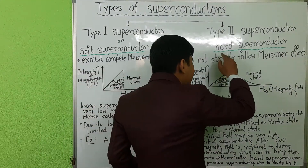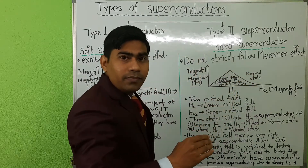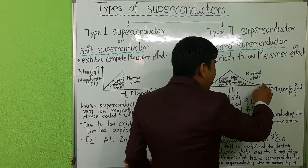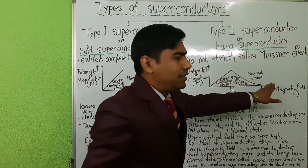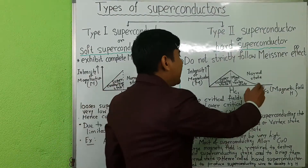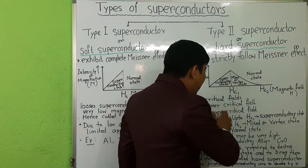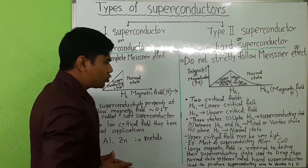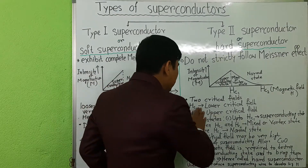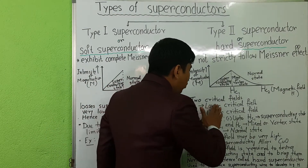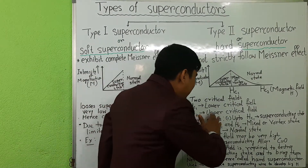After Hc1, the intensity of magnetization gradually becomes zero. The critical field Hc2 at which magnetization becomes zero is called the upper critical field. So in type 2 superconductors, there are two critical fields: Hc1, called the lower critical field, and Hc2, called the upper critical field.